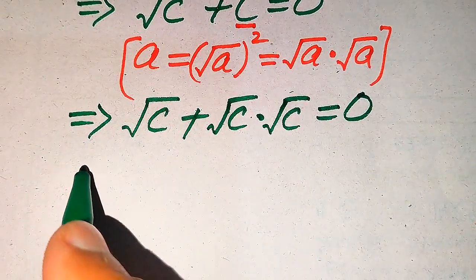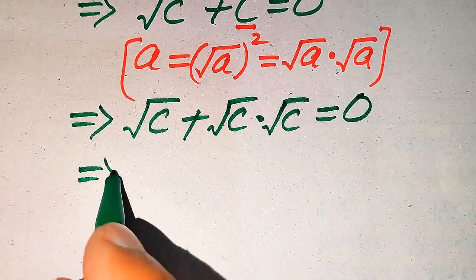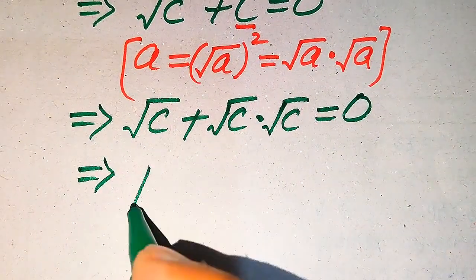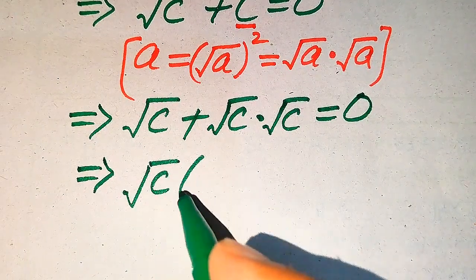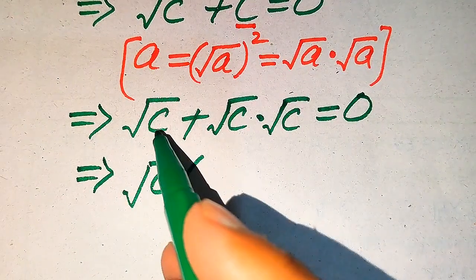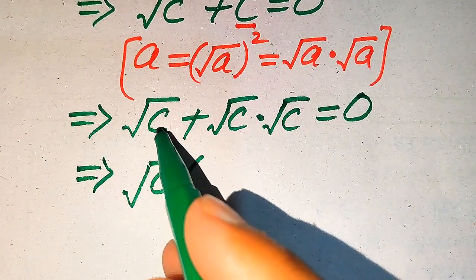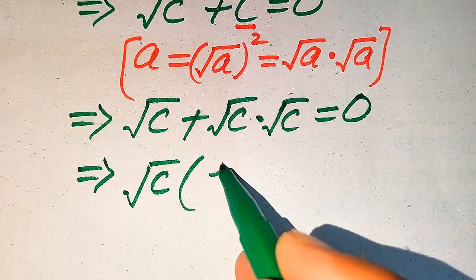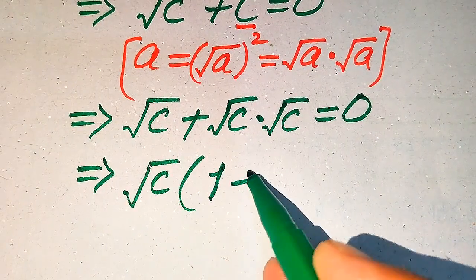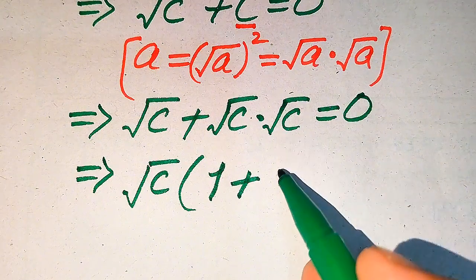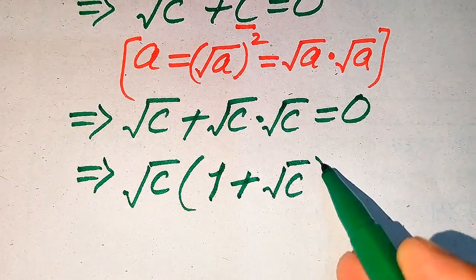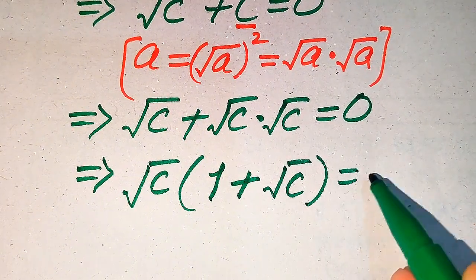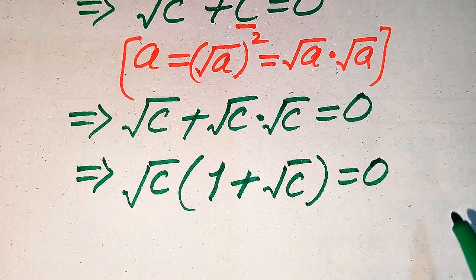Both terms involve square root of C, so we take √C as a common factor. We get: square root of C times (1 + square root of C) equals 0.